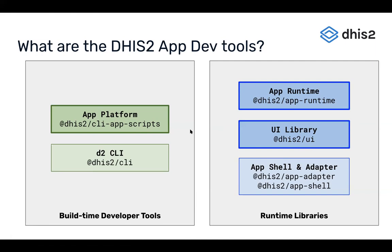The main build-time tool is what we call the App Platform, but it's really a set of build scripts. This is very similar to Create React App if you're familiar with that. It's also vaguely similar to Next.js and other build tooling that wraps things like Webpack. The D2 CLI has a number of utilities that allow you to, for instance, create or run a DHIS2 instance in Docker on your local machine — very useful when building an application that targets multiple versions of DHIS2, because you can spin up multiple versions of that server to test your application.